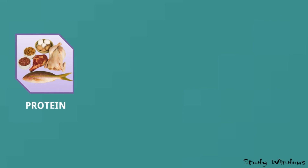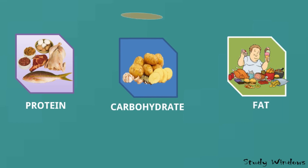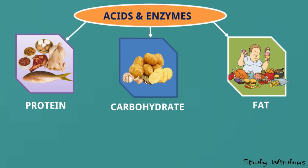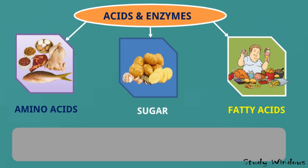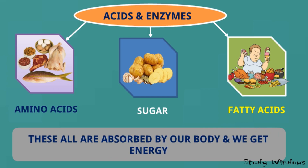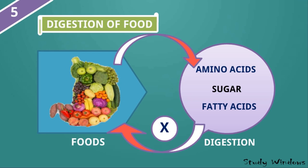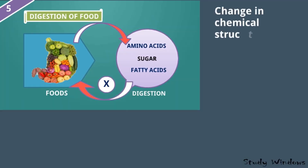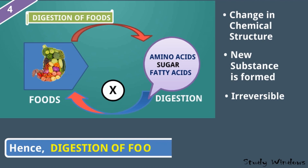We take protein, carbohydrate, and fat. With the help of acids and enzymes: protein changes into amino acids, carbohydrate changes into sugar, and fat changes into fatty acids. These are all absorbed in our body and we get energy. This food changes into amino acids, sugar, and fatty acids, but from amino acids, sugar, and fatty acids we cannot make the food back. Change in chemical structure of the food occurs, new substances are formed, and it is irreversible. Hence digestion of food is a chemical change.